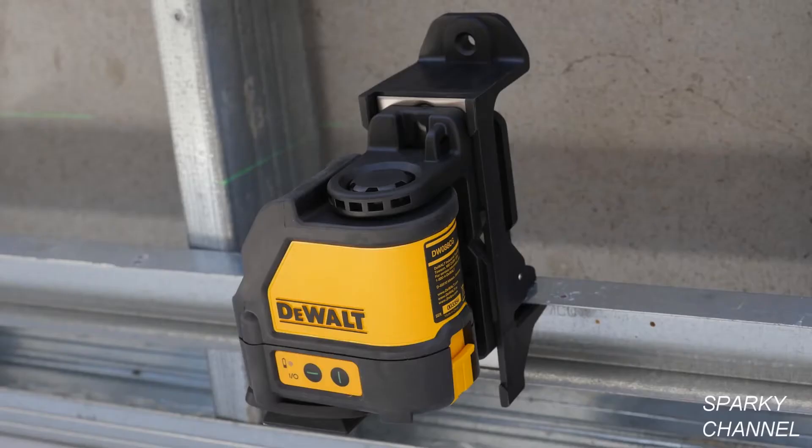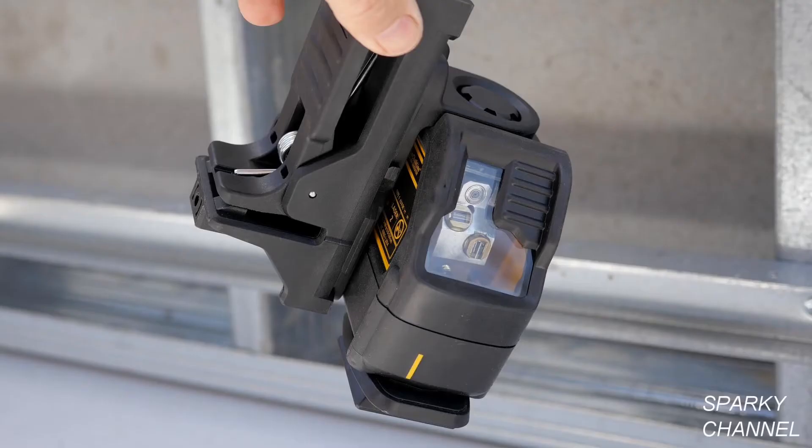An over-mold housing provides IP54 debris and water resistance and it has calibration protection from accidental drops of up to one meter.